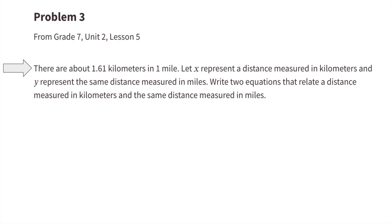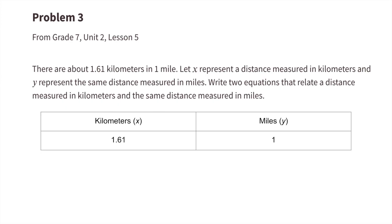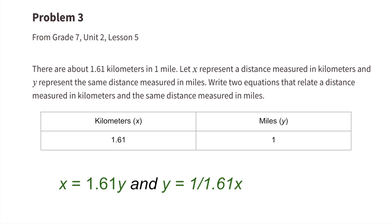Number three: there are about 1.61 kilometers in one mile. Let x represent a distance measured in kilometers and y represent the same distance measured in miles. Write two equations relating the two. In the left column we have kilometers x at 1.61 and miles y at 1. So x equals 1.61y, and the other equation is y equals one divided by 1.61 times x.